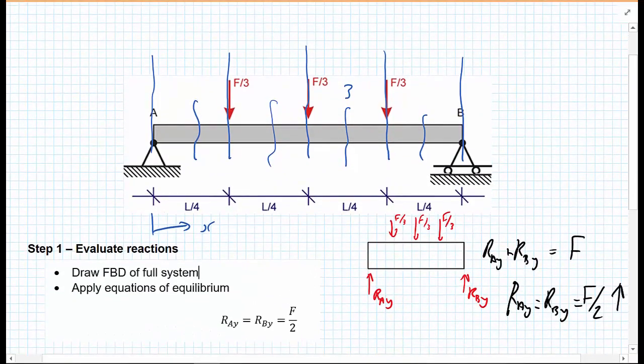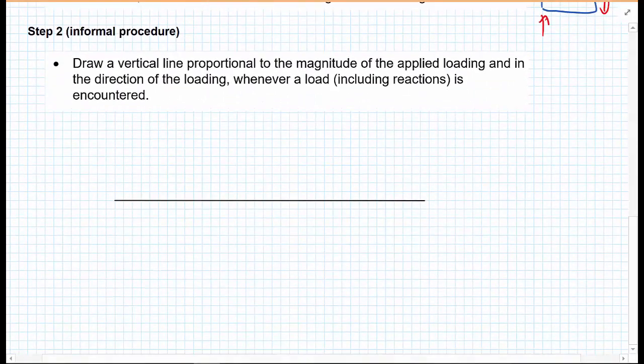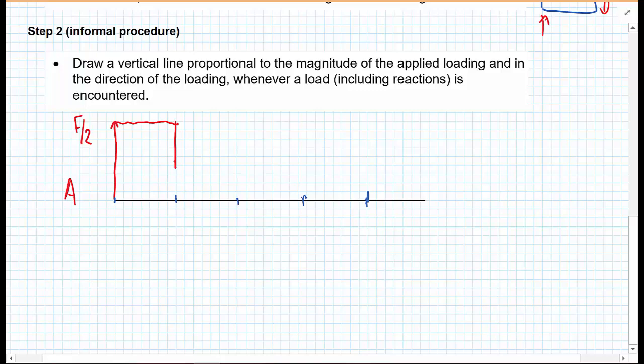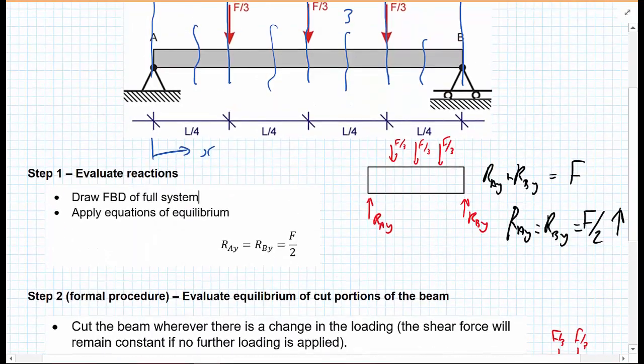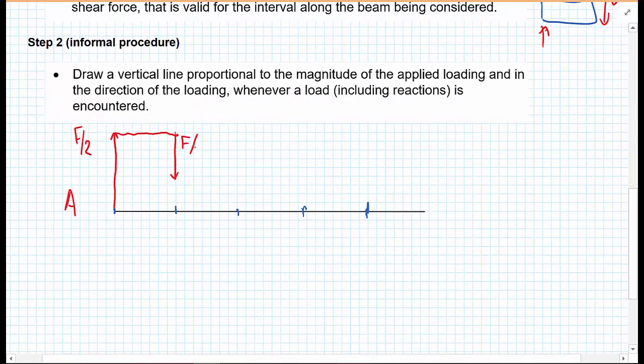So we draw a line for the x-axis along the beam. And wherever the reactions occur, we're going to draw a line vertically proportional to the loading. Let's go back to this picture of the diagram. At A, we have a force of F upon 2 applied. So before I even draw this one, what I'm going to do is draw 1. We have an F upon 3, an F upon 3, an F upon 3, and finally the reaction downwards at B. So at A, now we have a force of F upon 2.